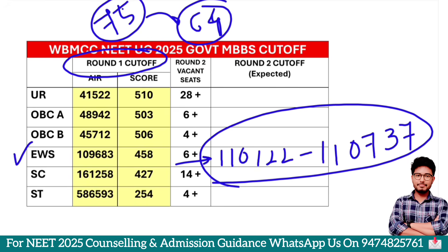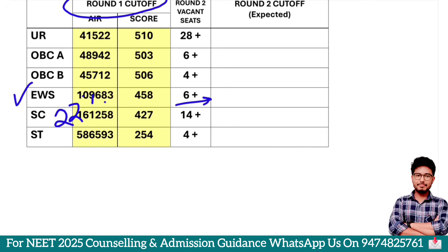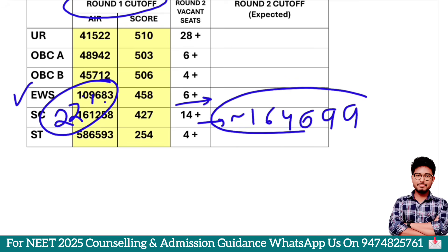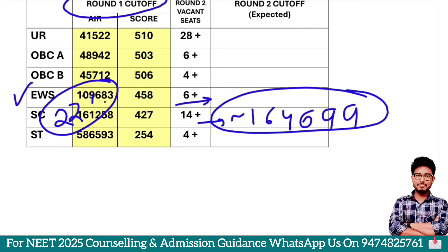Cut-off in Round 2 for EWS category — we will add reserve percentage. The EWS category cut-off adds 1,64,699. This is the rank. Which is the 1st category — we will pay for the government, which is only in Round 2. The 1st category which is 1,65,000 is the lowest expectation with Round 2.